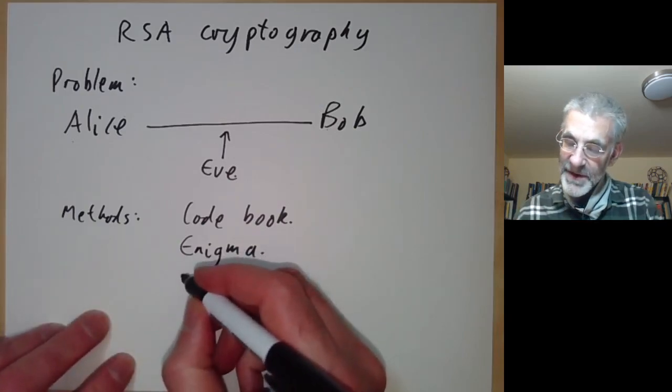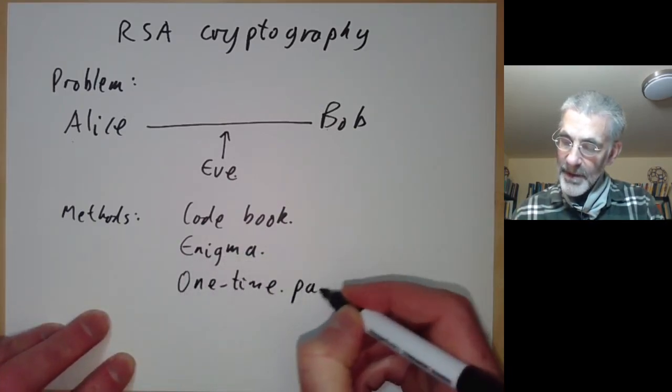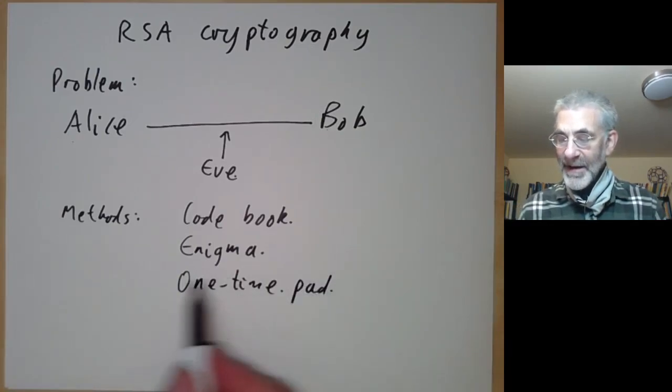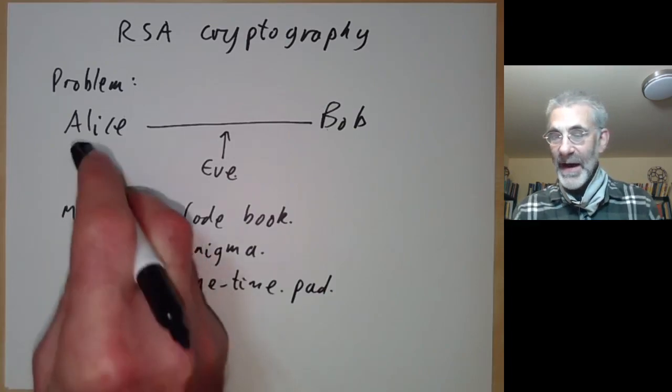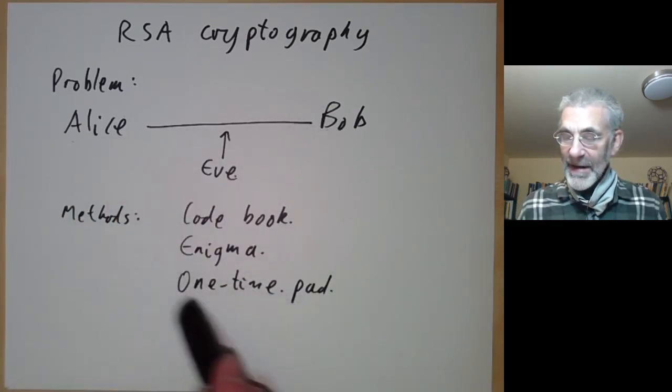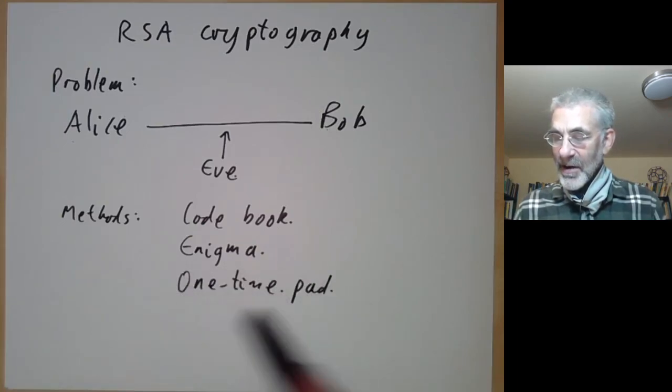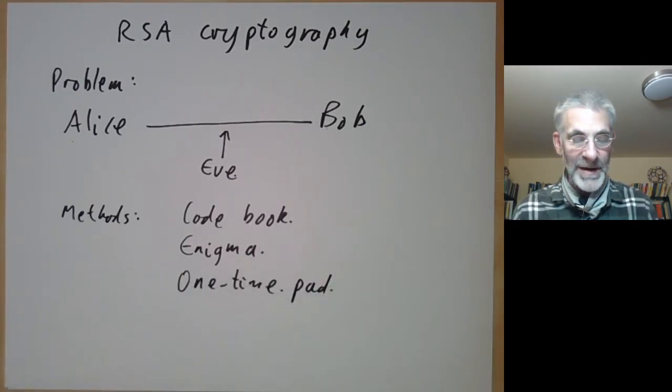A third method is a one-time pad, which consists of a sequence of random letters or numbers that both Alice and Bob have. Alice simply adds the garbage in the one-time pad to her message and Bob subtracts it again. If the one-time pad is random, this is completely secure.